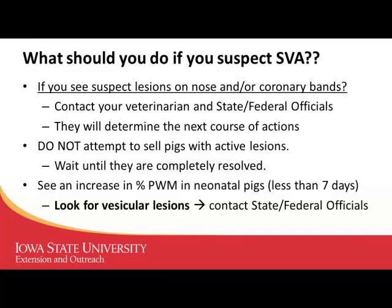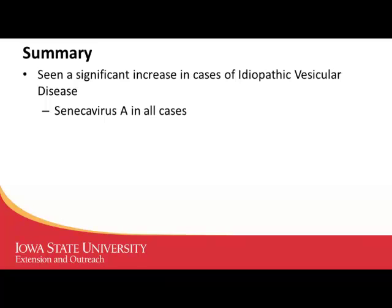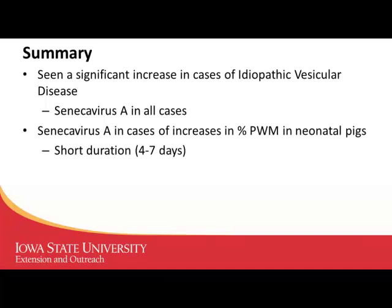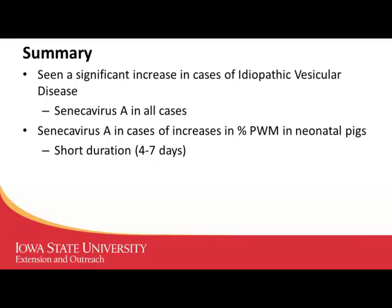In summary, we've seen an increase in idiopathic vesicular diseases — all of which turned out to be Seneca. We now know Seneca was the definitive cause of these idiopathic vesicular diseases. We've seen it in sow farms where it tends to cause a short spike in pre-weaning mortality in pigs less than seven days of age — not wean pigs, not mid-suckling pigs, but very young pigs — very similar to what colleagues in Brazil observed. The virus has changed from historical isolates, and that may explain the increase in number of cases.